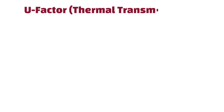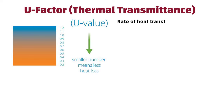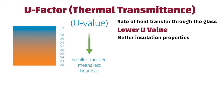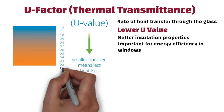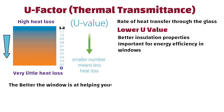U-Factor, or thermal transmittance, measures the rate of heat transfer through the glass. A lower U-Factor indicates better insulation properties, which is important for energy efficiency in windows. U-Factor generally ranges from 0 — very little heat loss — to 1.2 — high heat loss. So the lower the U-Factor, the better the window is at helping your house stay just the right temperature.